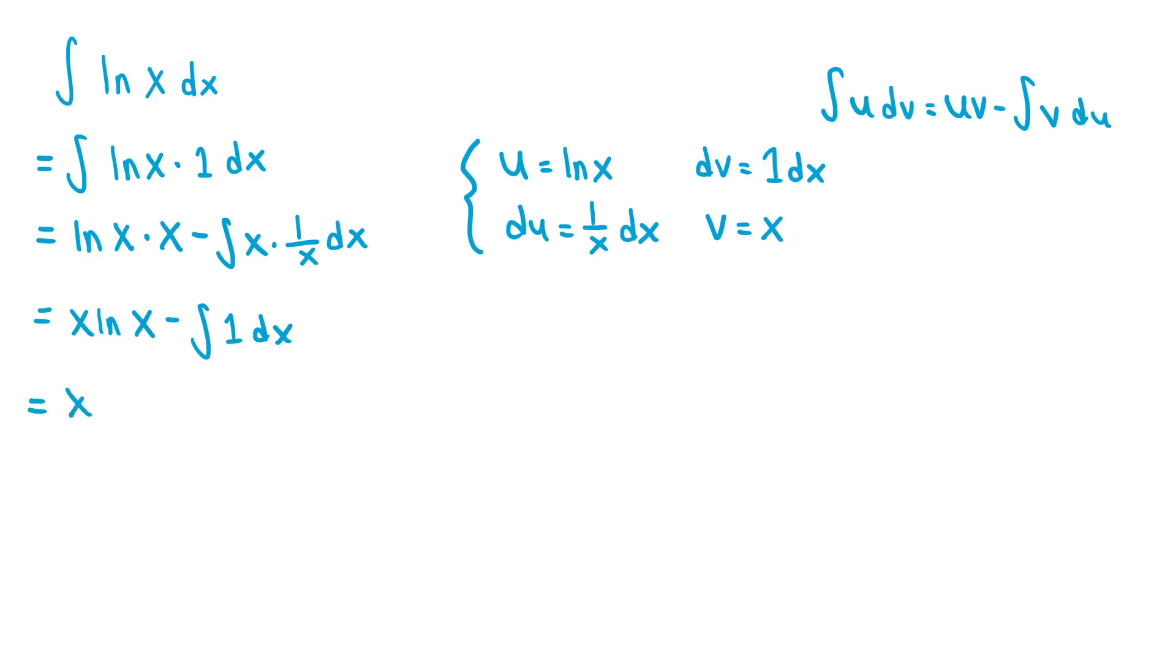So the x ln(x) stays the same, and then the integral of 1 is just equal to x. So this is just minus x. And then we need to add some constant C to the end of the integral.